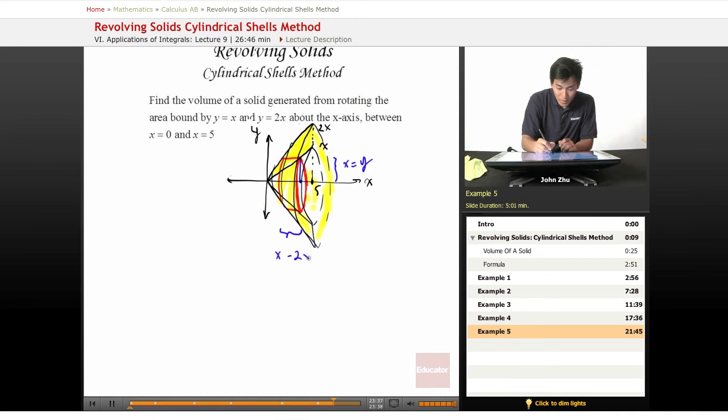But since we're going to be integrating in terms of y, we might want to switch everything to terms of y. So x minus 2y, which equals y minus y over 2.